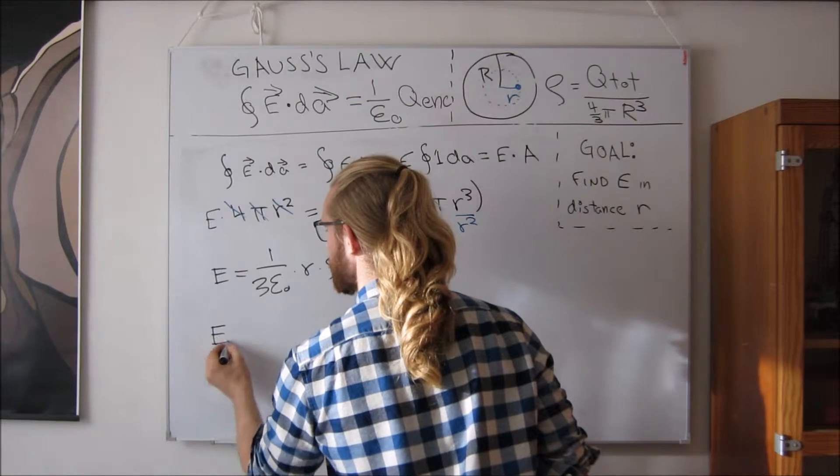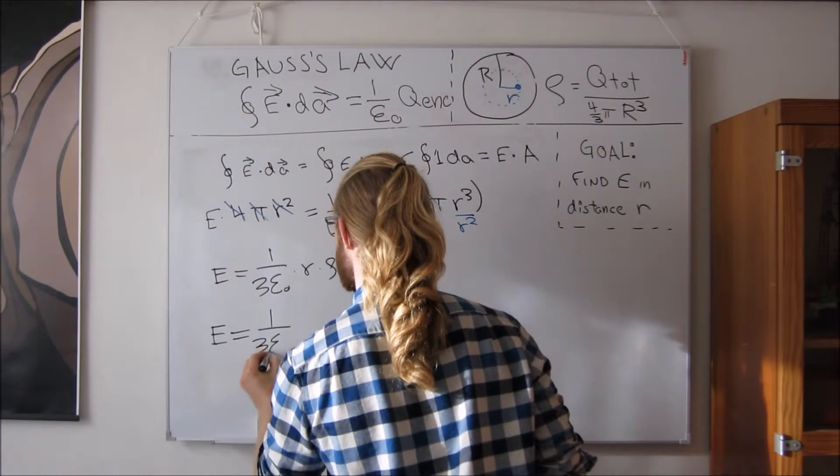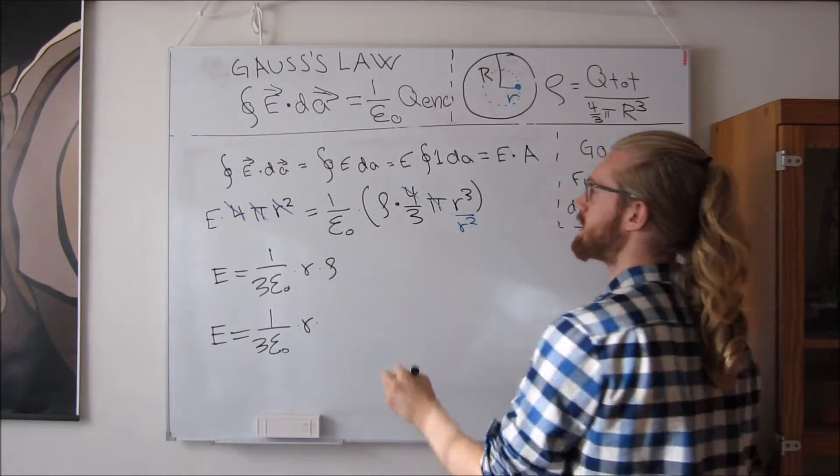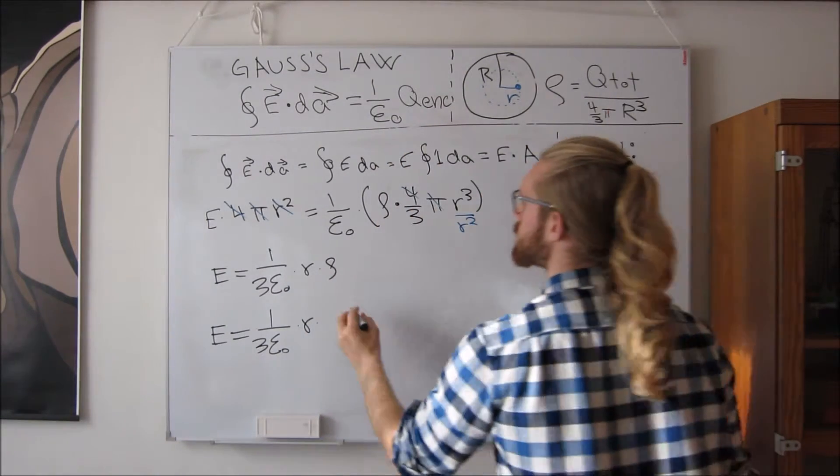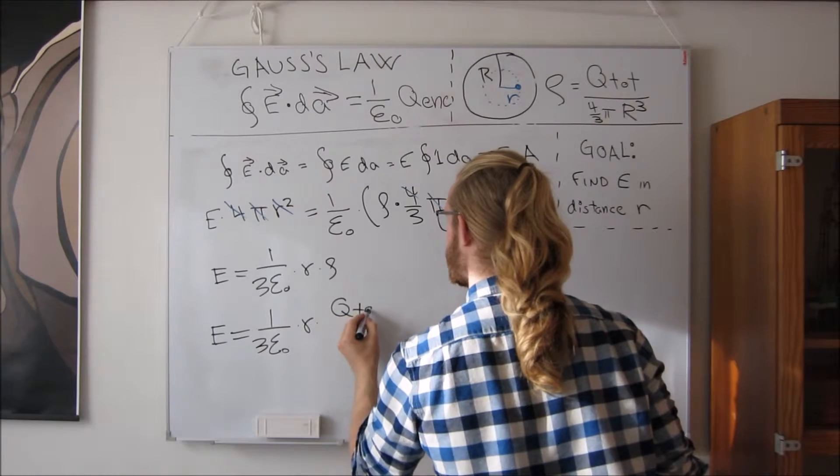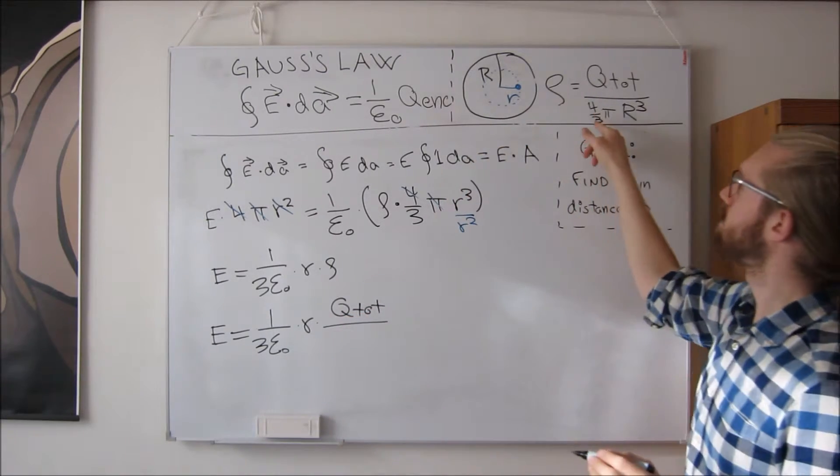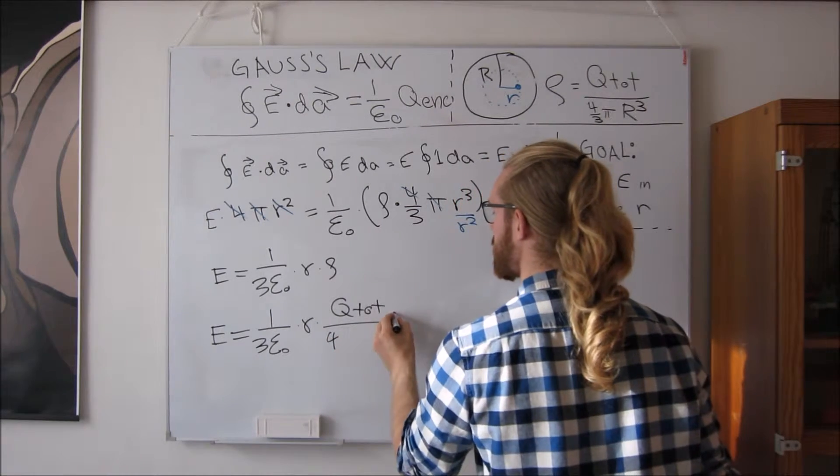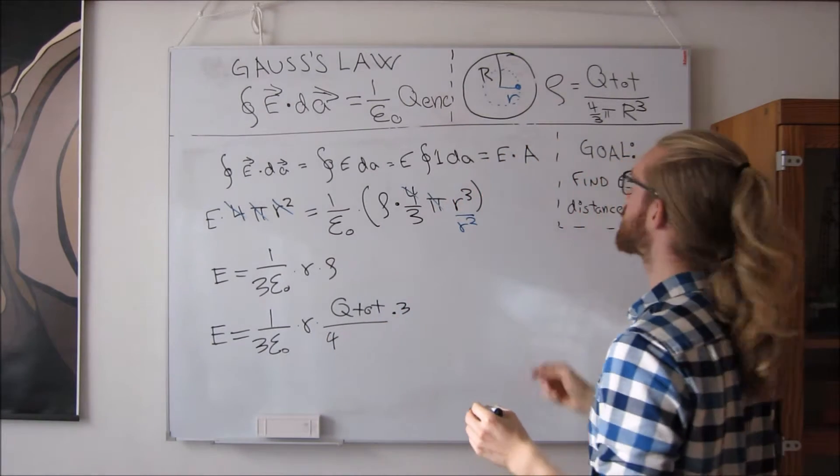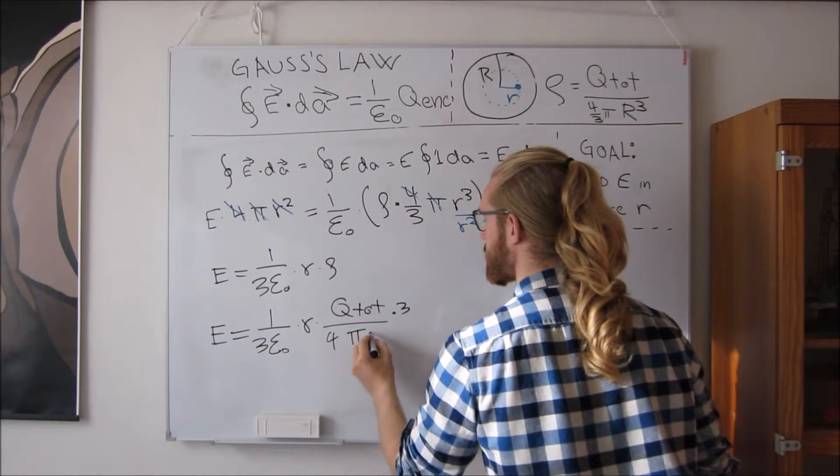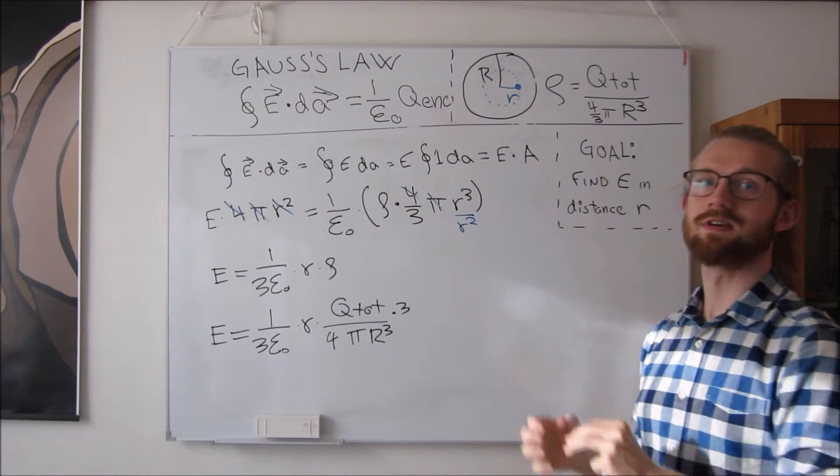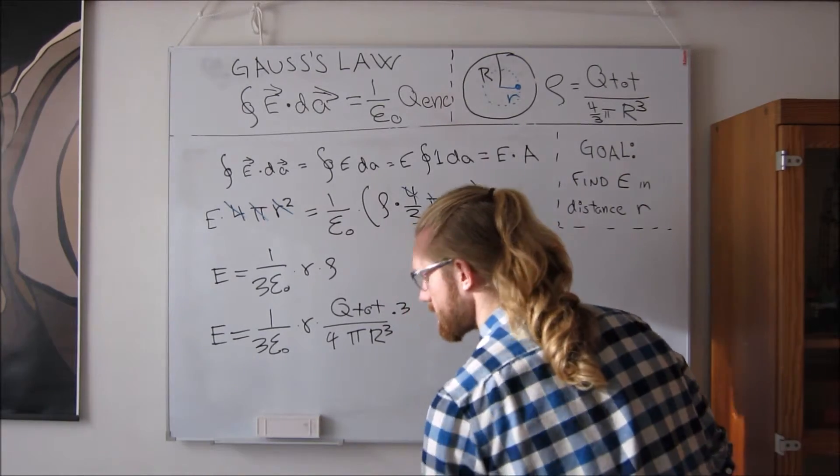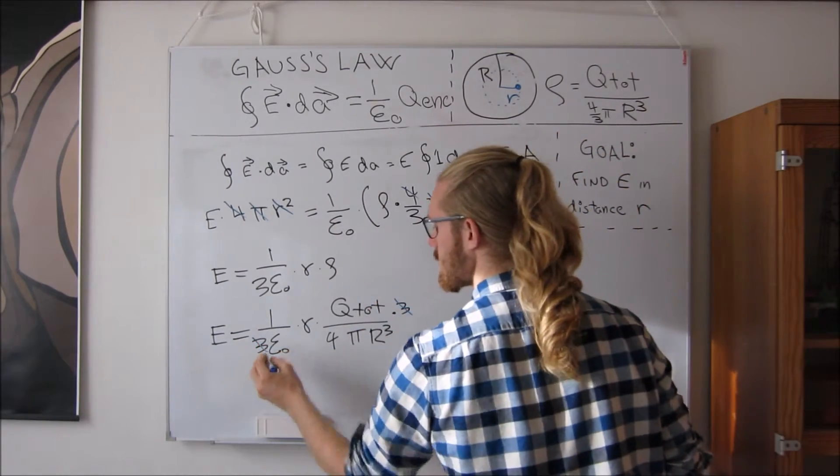So the electric field strength is 1 over 3 epsilon, and then the distance. And now we need to take the total charge and divide with 4 over 3. It's the same as dividing by 4 and multiplying by 3, but we still need pi and the radius of the sphere cubed. And now we see that the 3's cancel.